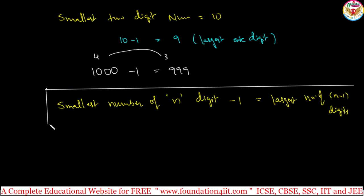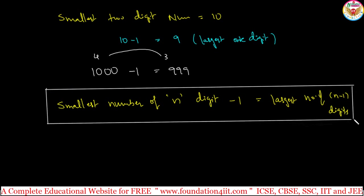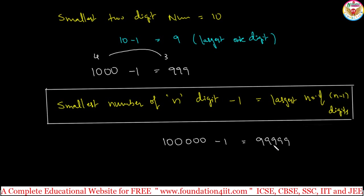So summarizing smallest and largest: by adding 1 to any largest number, it becomes the smallest of the next digit count. Or, smallest number of any n digits minus 1 gives the largest of the previous digit count. For example, the smallest 6-digit number minus 1 — 6 becomes 5 — gives the largest 5-digit number. Also, 10,000 minus 1: 10,000 is a 5-digit number, so subtracting 1 gives 9999, the largest 4-digit number.